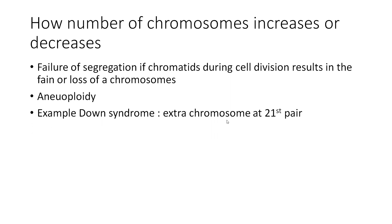Down syndrome involves an autosome, so the chromosome number is written as: normal is 22 pairs + XY. With the extra 21st chromosome it becomes 22 + 1 XY, giving 47 total.